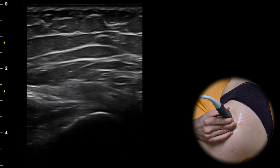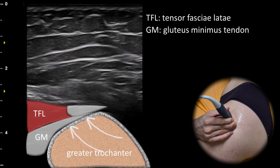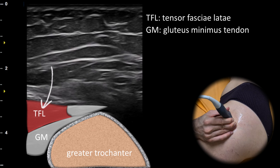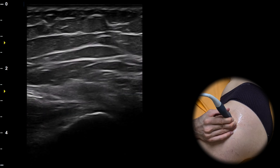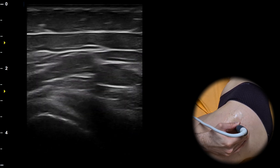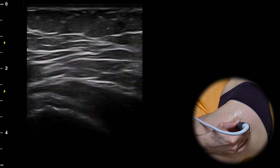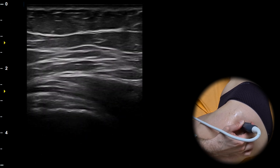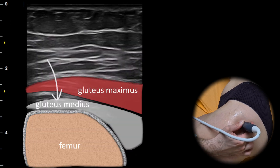Sliding anteriorly we can evaluate the anterior facet of the greater trochanter where the gluteus minimus tendon attaches. This tendon is covered by the tensor fasciae muscle. Sliding posteriorly we can assess the lateral facet of the greater trochanter where the gluteus medius tendon attaches. The gluteus maximus muscle is situated superficially.